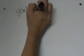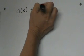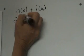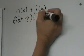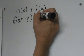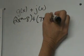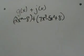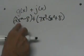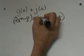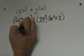Our g function we are going to add to the j function. So we are going to write down our g function first: 2x squared minus 8, and we are going to add to that the j function, which is 7x cubed minus 5x squared plus 8. When we are adding these two functions together, all we are going to do is add our like terms. Since we are just adding, we take the highest exponent first, which would be 7x cubed.